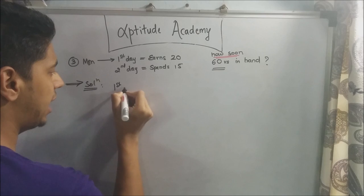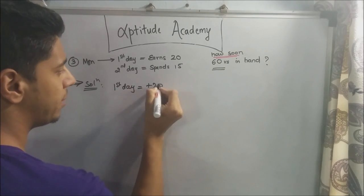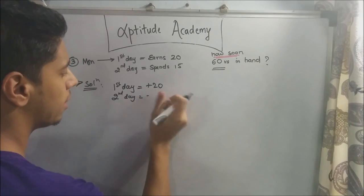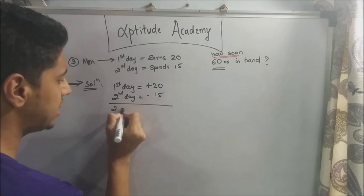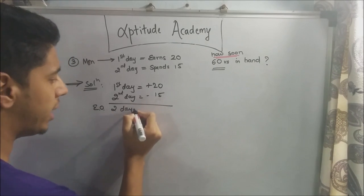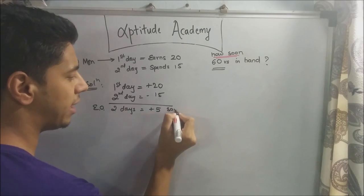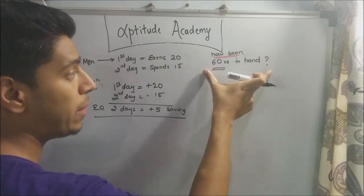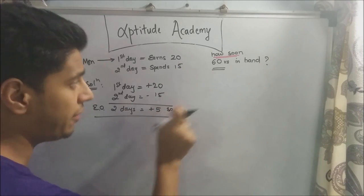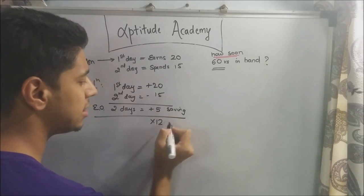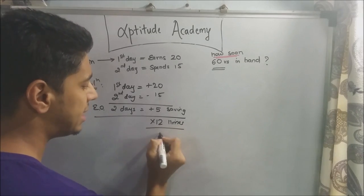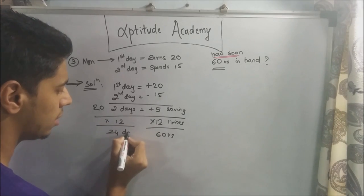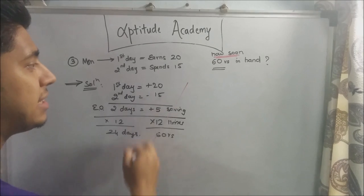The normal approach would be: on the first day he earns +20, on the second day he spends 15, so at the end of two days he saves +5 rupees. To get 60 rupees you'd say he has to do this 12 times, giving 2 × 12 = 24 days. However, this approach is completely wrong.